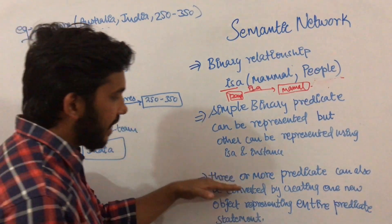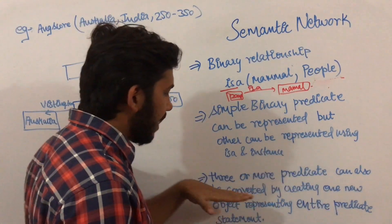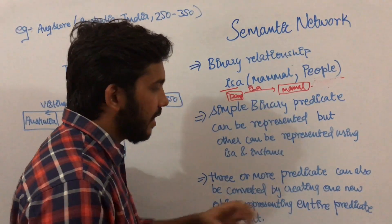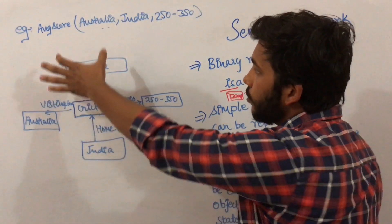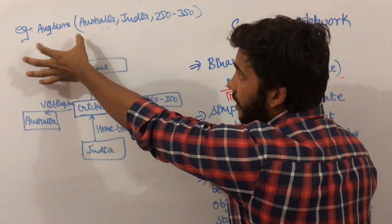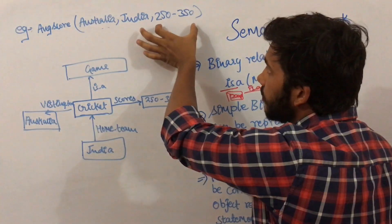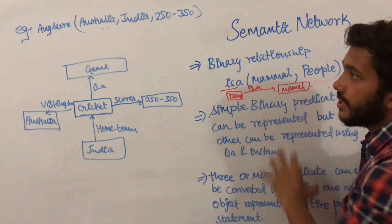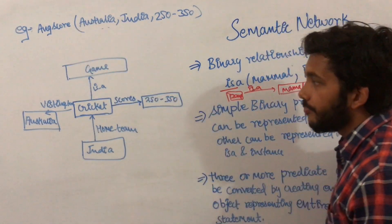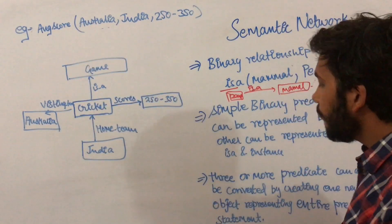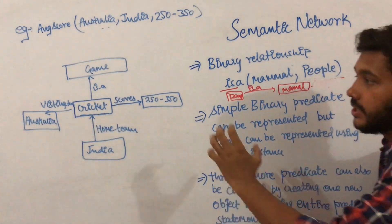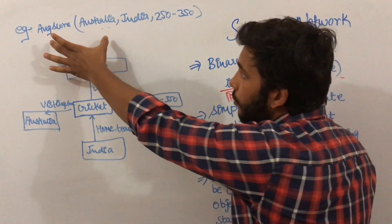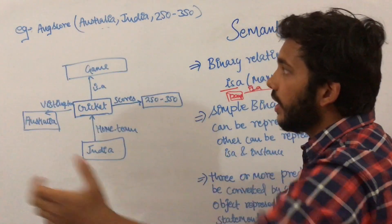If we want to represent three or more predicate relationships, we can convert them by creating one new object representing the entire predicate statement. Suppose the statement is: average score, Australia vs India, is 250 to 350. This is not a simple binary relationship — it is a three-part relationship. For representing this type of statement, we create a new object that will represent the complete predicate statement.